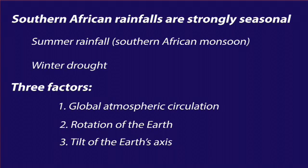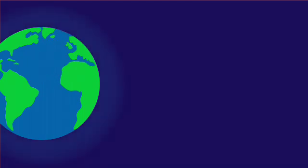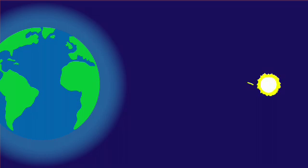Let's turn first to atmospheric circulation. We start with the earth surrounded by an atmosphere — greatly exaggerated in size — and the sun. The sun warms the earth, with the heating greatest at the equator. This warms the air there, making it buoyant.